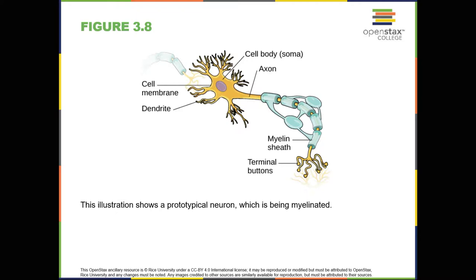Glial cells, which outnumber neurons 10 to 1, are traditionally thought to play a supportive role to neurons, both physically and metabolically. Glial cells provide scaffolding on which the nervous system is built. They help neurons line up closely with each other to allow neuronal communication, provide insulation to neurons, transport nutrients and waste products, and mediate immune responses.